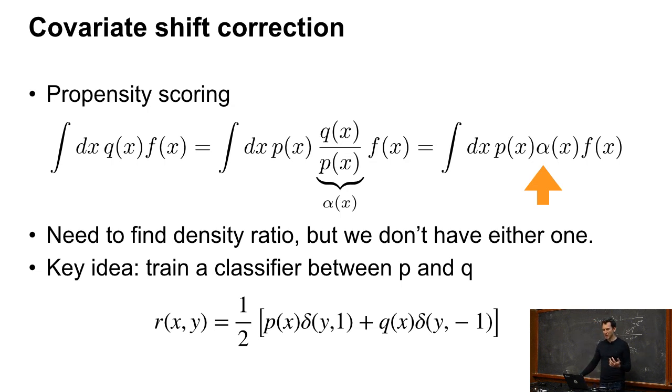So let's pick a classifier. And let's assume that my training and test data are of the same size. And I'm just picking training set with weight one half and the test set with weight one half. Just giving the training set class label one and the test set class label minus one.